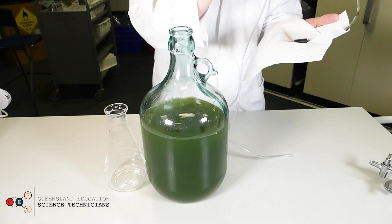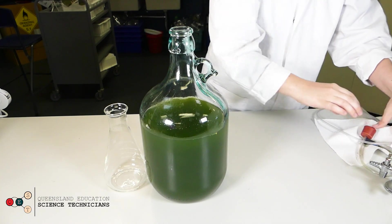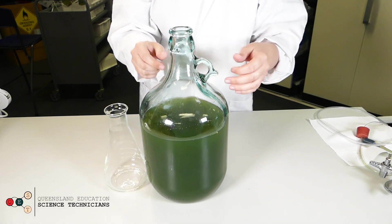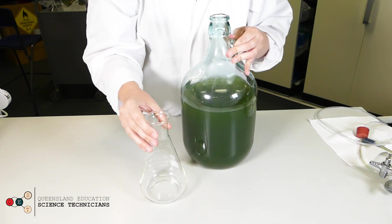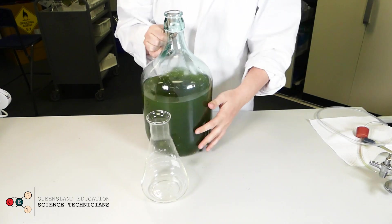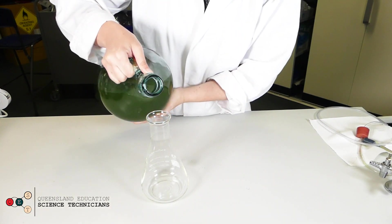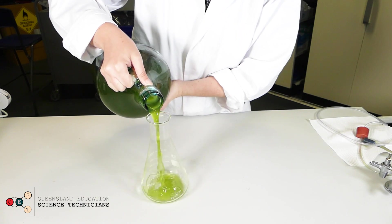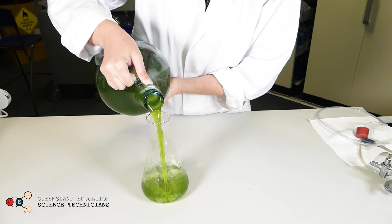I'm just going to remove the air stone that I used to keep the culture aerated while it was growing, and I'm going to pour out about 500 mils of my bulked up algal culture into this 500 milliliter conical flask.